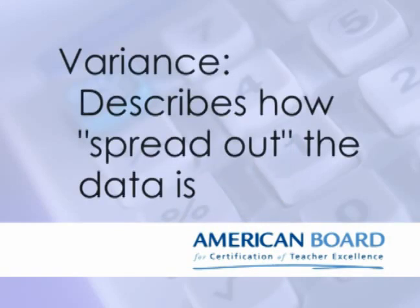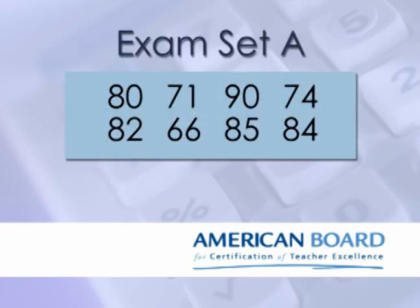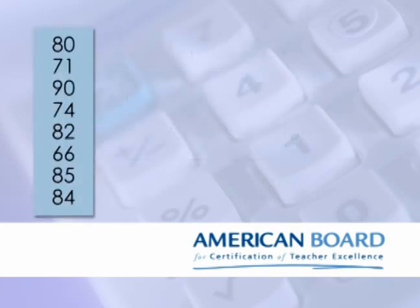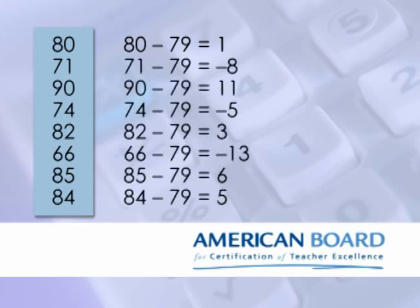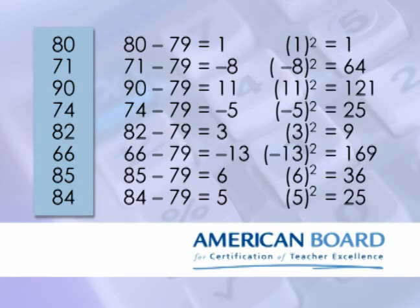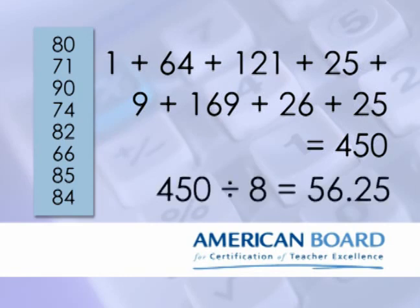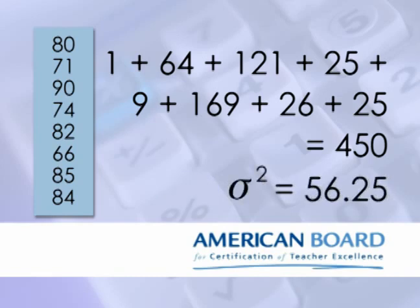Variance describes the spread, or the variability, of the values in a data set — how different the data values are from one another. Let's take a look at a new data set, a set of 8 exam scores. The mean of this data is 79. To calculate the variance, we take each of these values and subtract the mean. For example, the first value is 80, so 80 minus the mean of 79 is 1. You then take each of these differences and square them, and then add them together. In this case, you'll get a grand total of 450. Finally, divide by the population size, which is 8. The result is 56.25. Therefore, the variance of this data set is 56.25.